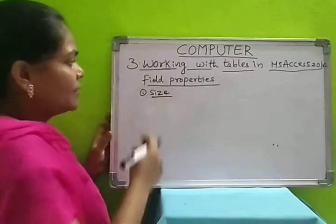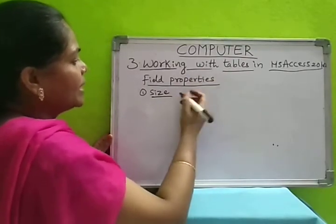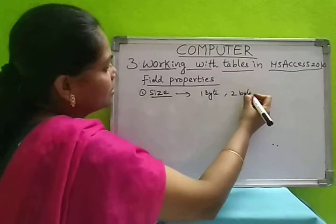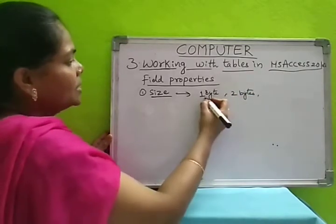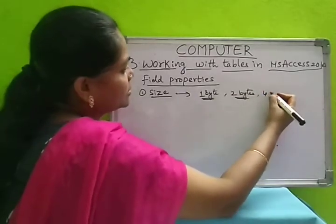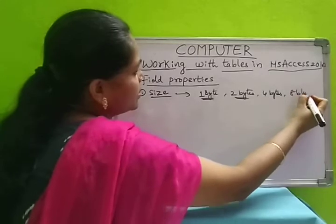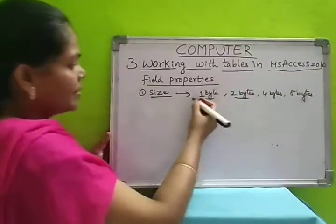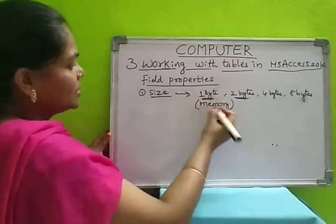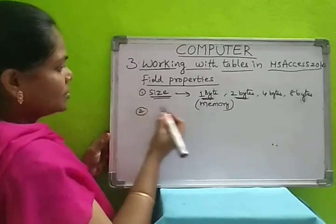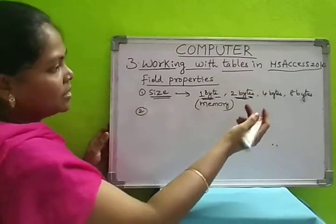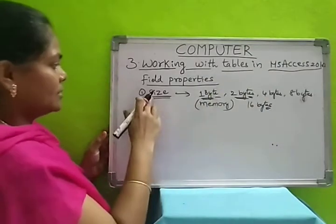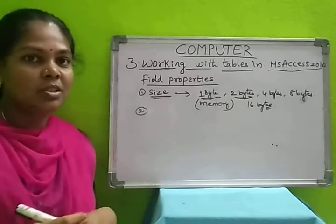You can set 1 byte or 2 bytes — whatever memory space you want, you can mention in the size. Some numbers will take 1 byte, some 2 bytes, and some can take 16 bytes. How much size you want for the field, that you can mention in the size property.